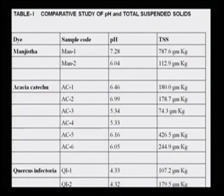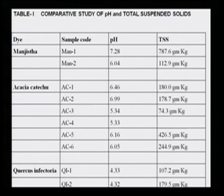The third example was Quercus infectoria (gall nut), which is used both as a dye and as a natural mordant. These were from the same two companies, and the pH was more or less similar. However, the total suspended solids varied: in the first case it was 107, whereas in the second case it was about 179. That difference caused them to act or dye differently.